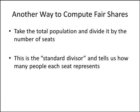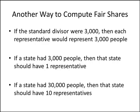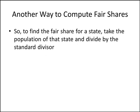Here's something else we need to think about. Another way to compute fair shares is to take the total population and divide it by the number of seats. That's called the standard divisor, and it tells us how many people each seat represents. For example, if the standard divisor were 3,000, then each representative would represent 3,000 people. If a state had exactly 3,000 people, it should have one representative; if it had exactly 30,000 people, it should have 10 representatives. So to find the fair share for a state, instead of using percentages, we can take the population of that state and divide it by the standard divisor.